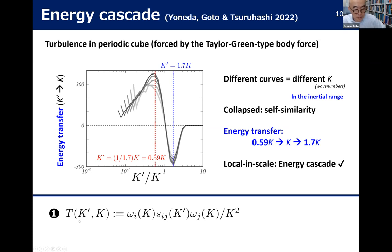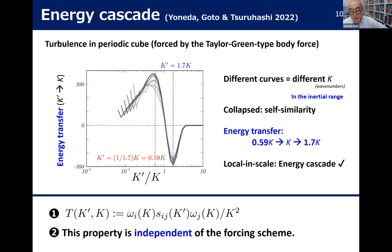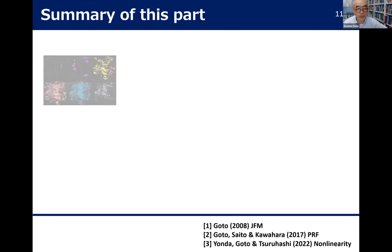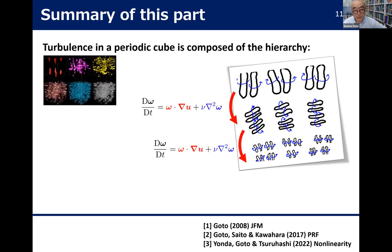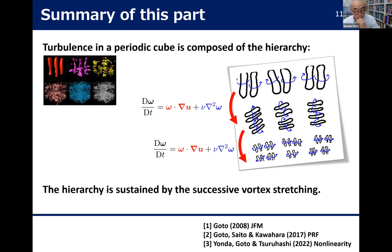More precisely, this quantity is estimated by omega times the rate-of-strain tensor times omega — that is, omega·S·omega, where S is the strain-rate tensor, omega is the vorticity, and K is the wave number. This is the enstrophy production term. I have been frequently asked whether this is universal; I checked and it is independent of the forcing in the periodic box. To summarize this part: turbulence in a periodic cube is composed of a hierarchy of counter-rotating pairs, created by successive scale-by-scale vortex stretching.